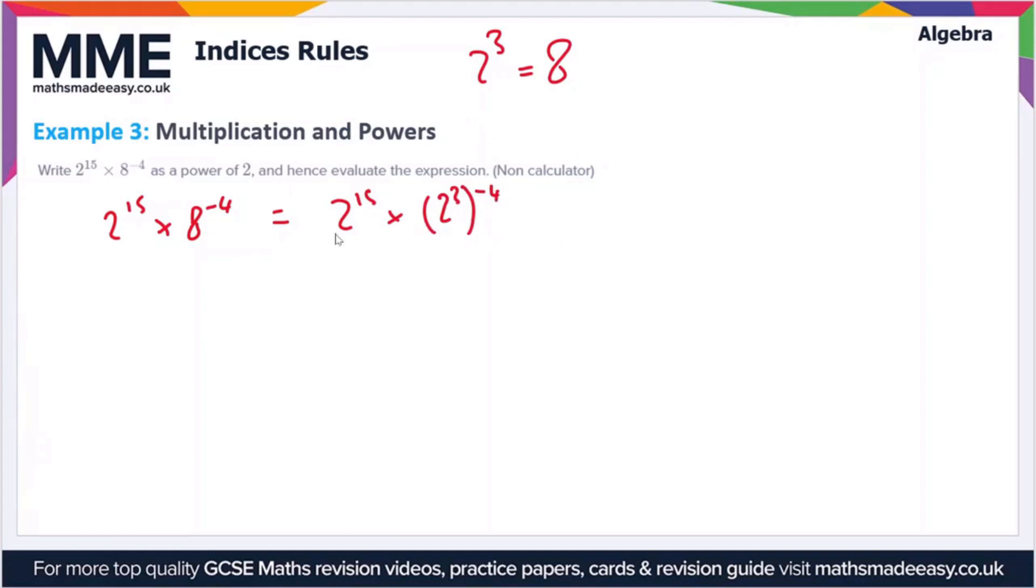Now if we use our rules of indices or powers and roots rules, so if you've not seen the powers and roots video then I recommend you watch that, but this is an example of the multiplication law. So this expression is equal to 2 to the 15 times 2 to the 3 times minus 4, so we multiply the powers in this case, which gives us 2 to the 15 times 2 to the power of minus 12.